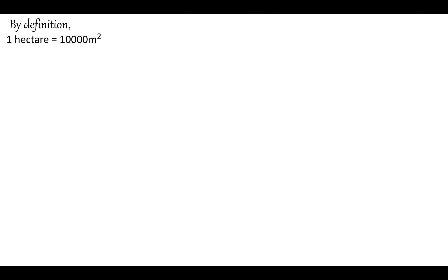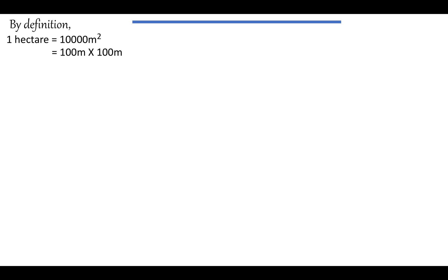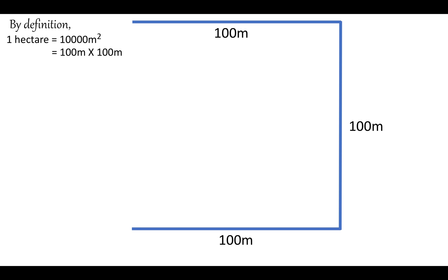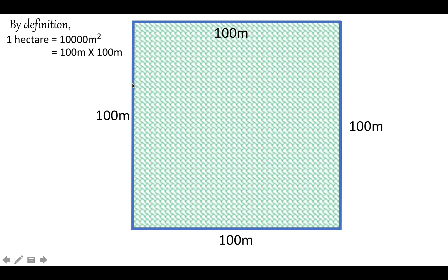By definition, one hectare is defined as 10,000 meter square, which we can write as 100 meter by 100 meter. To understand this we'll be taking help of geometry. If we draw a square of side 100 meter, the area of this square is exactly equal to one hectare.